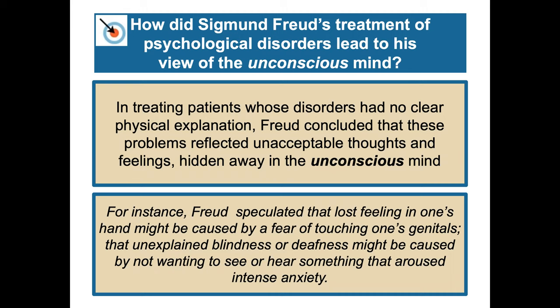How did Freud's treatment of disorders lead to his view of the unconscious mind? In treating patients whose disorders had no clear physical explanation, Freud concluded these problems reflected unacceptable thoughts and feelings hidden deep within an individual's unconscious mind, which was influencing the patient's anxiety, depression, or other manifestations. For instance, Freud speculated that lost feelings in one's hand might be caused by a fear of touching one's genitals, or that unexplained blindness or deafness might be caused by not wanting to see or hear something that aroused intense anxiety.